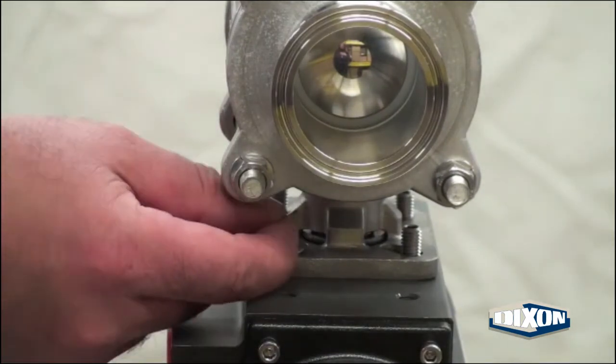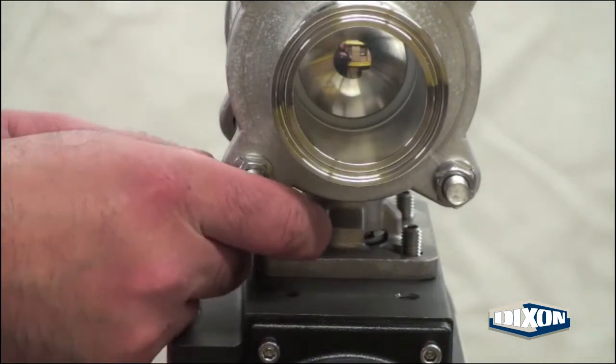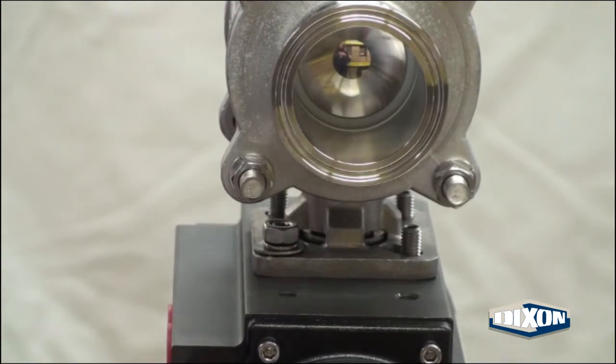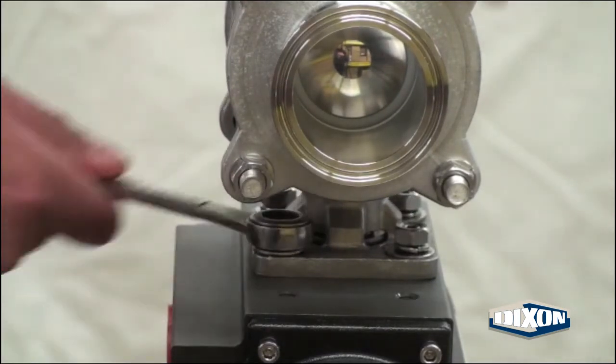Assemble a flat washer, a lock washer, and a nut to each of the four set screws and tighten securely in a star pattern.